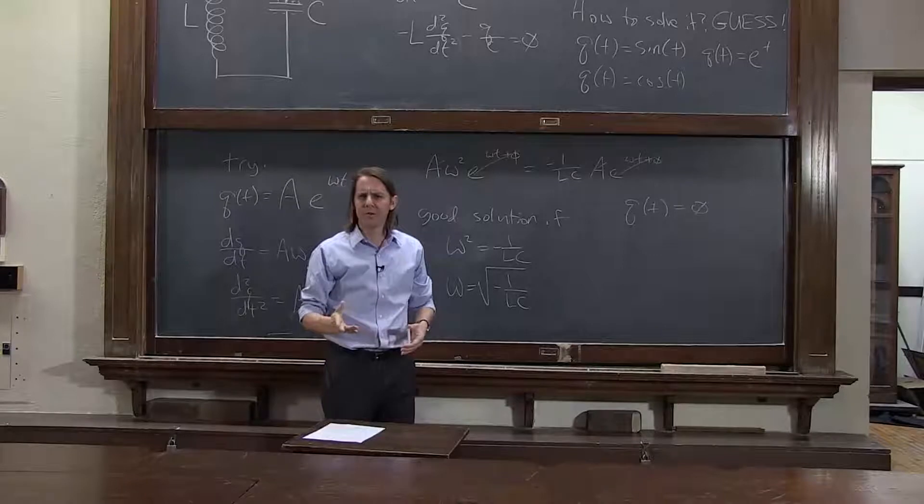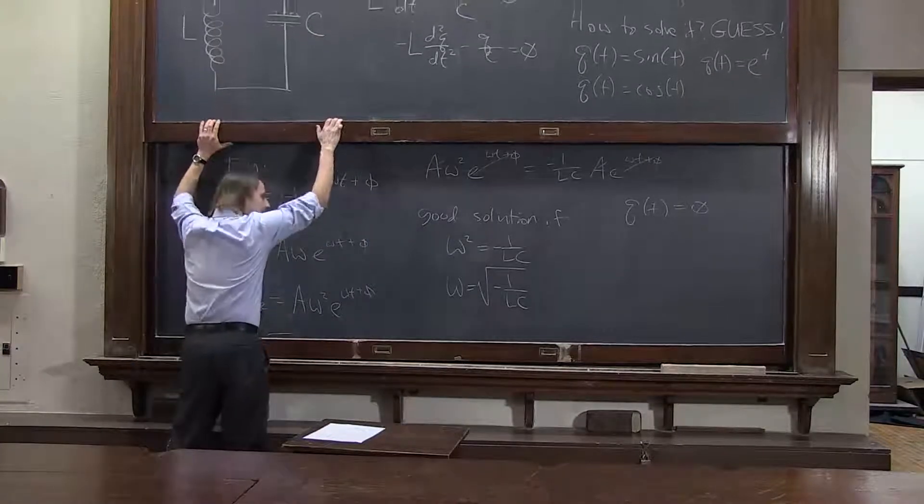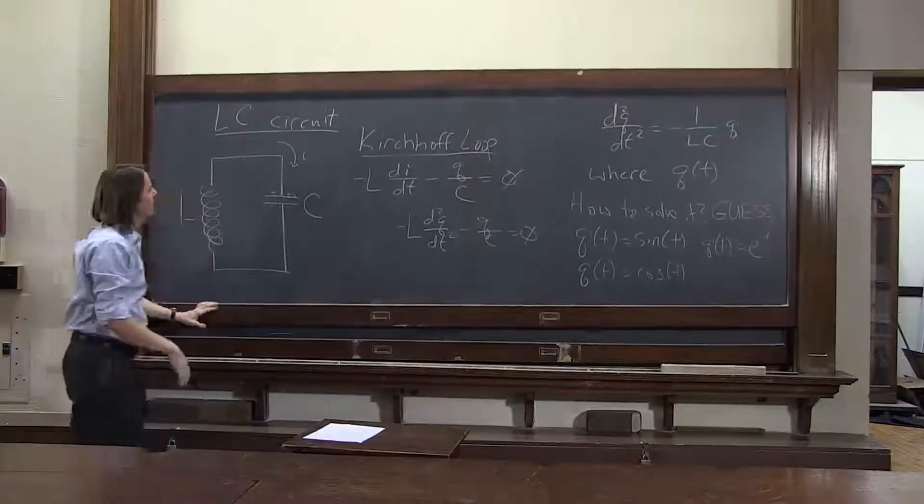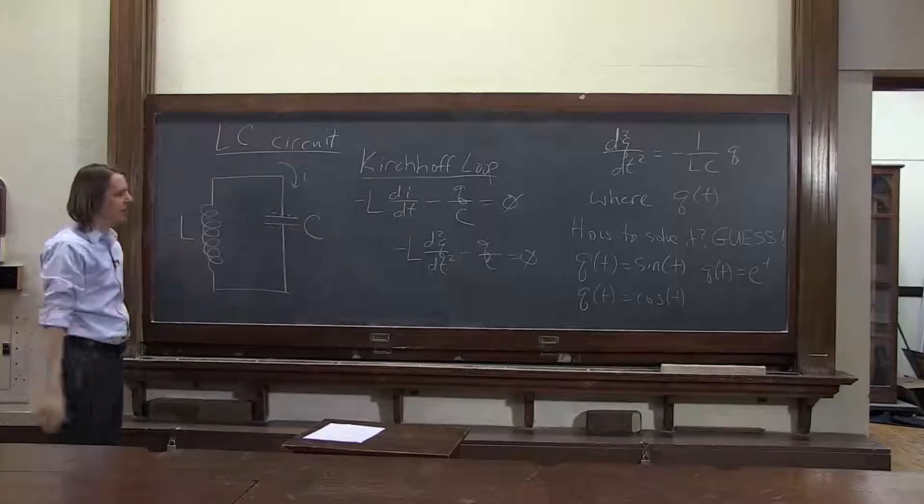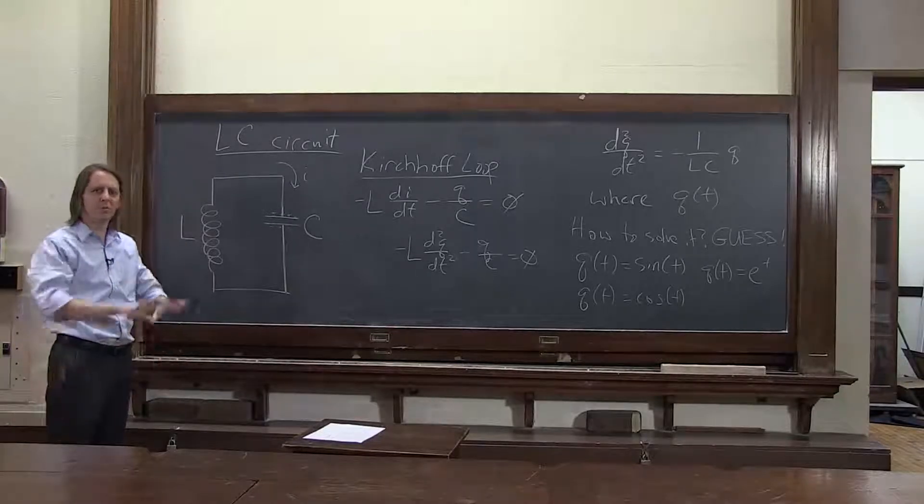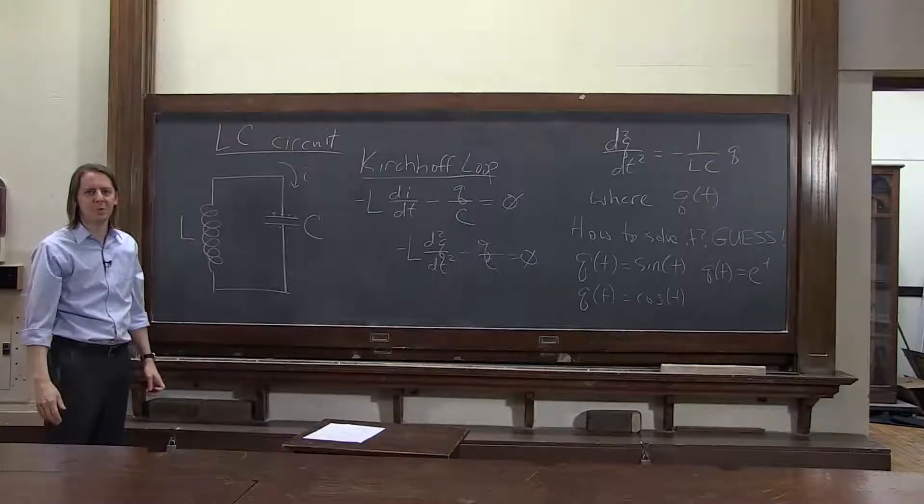Sure, the first derivative of zero is zero and the second derivative of zero is zero, so it follows all the rules. Is it a reasonable answer? Sure, let's look at the circuit. Can nothing happen? Yes, that's a reasonable answer, it just sits there. That's often called the trivial solution.